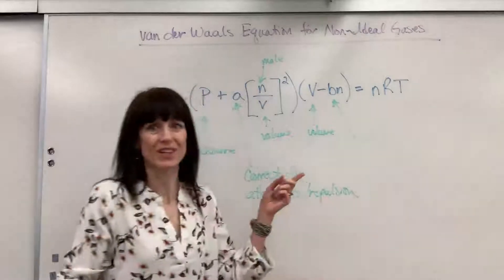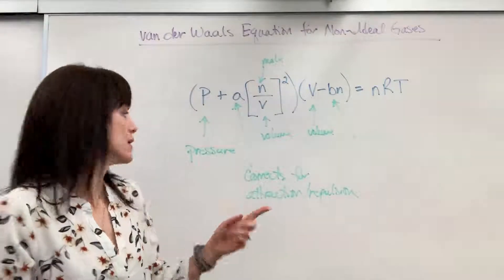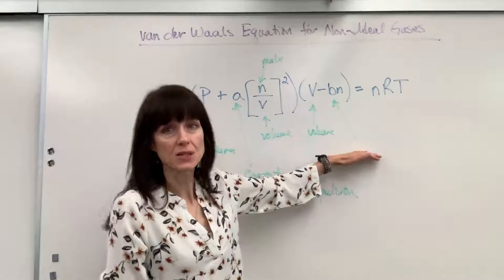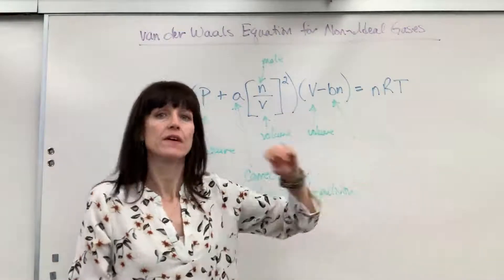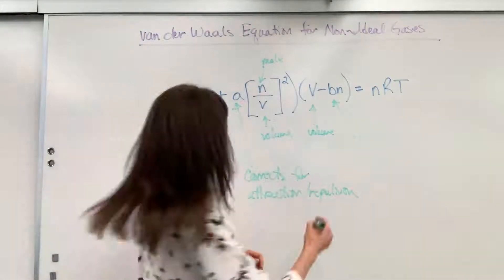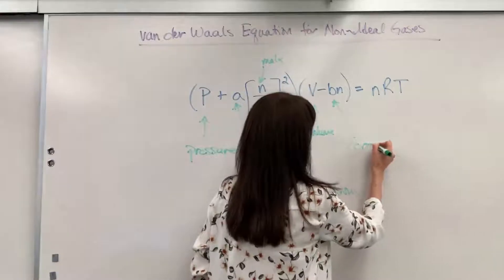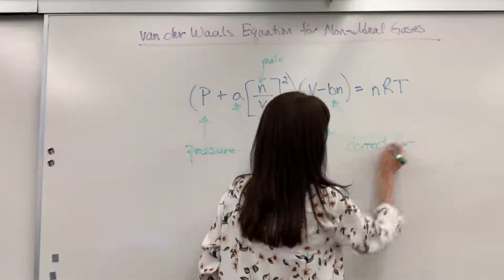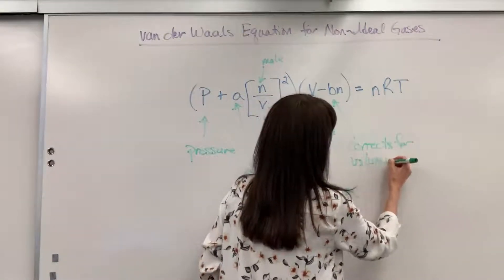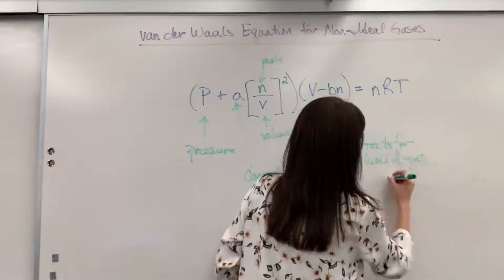And then B, this is special. So that constant B, if this accounts for attraction repulsion, this is what accounts for the volume of the gas molecule. So this corrects for the volume of the gas molecule.